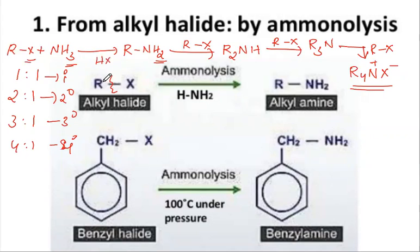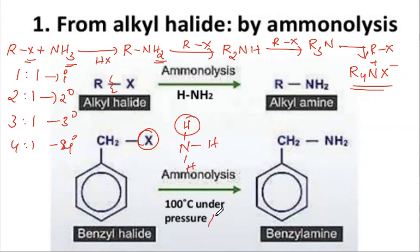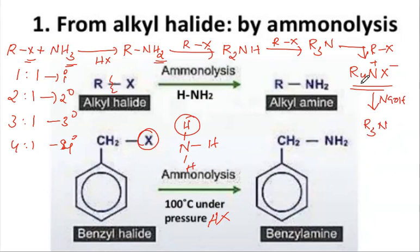To prepare aromatic amines, you can use benzyl chloride. Benzyl chloride reacts with ammonia — one of the hydrogen atoms from ammonia combines with the halogen to form hydrogen halide, and the aryl group attaches to nitrogen. By using this method, we can prepare both aliphatic and aromatic amines: primary amines, secondary amines, and tertiary amines.